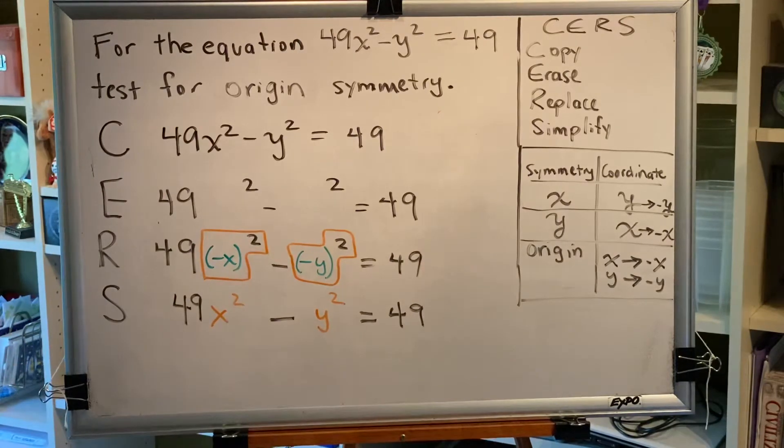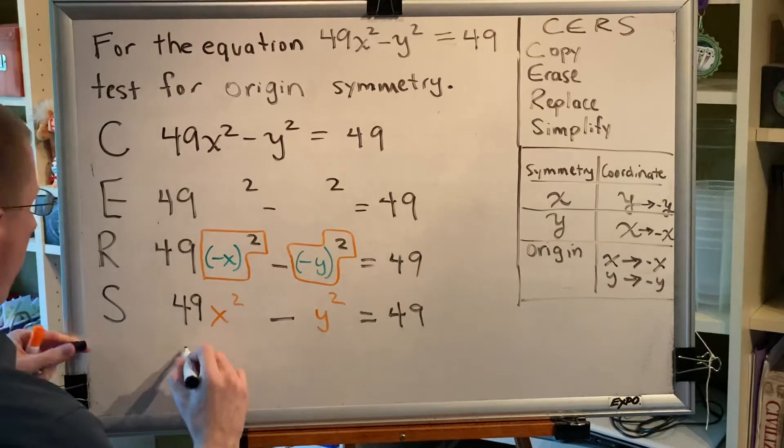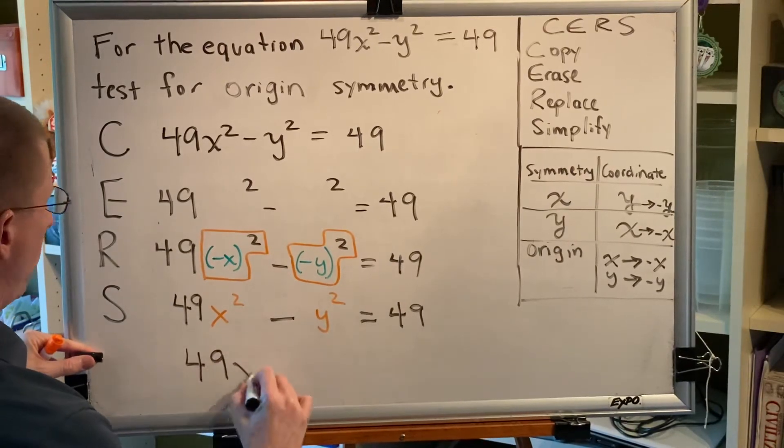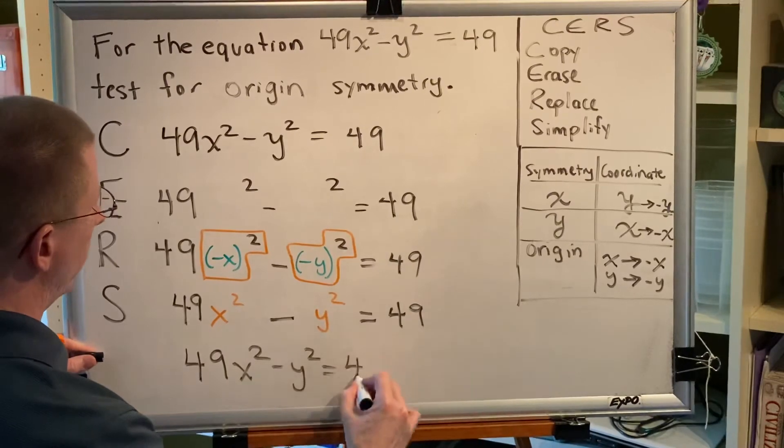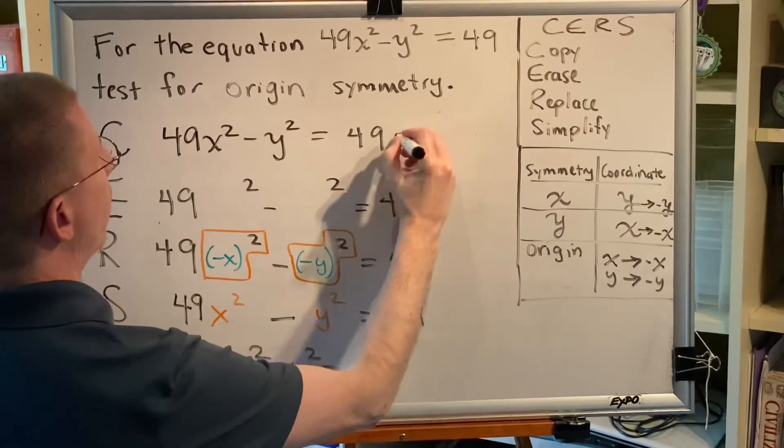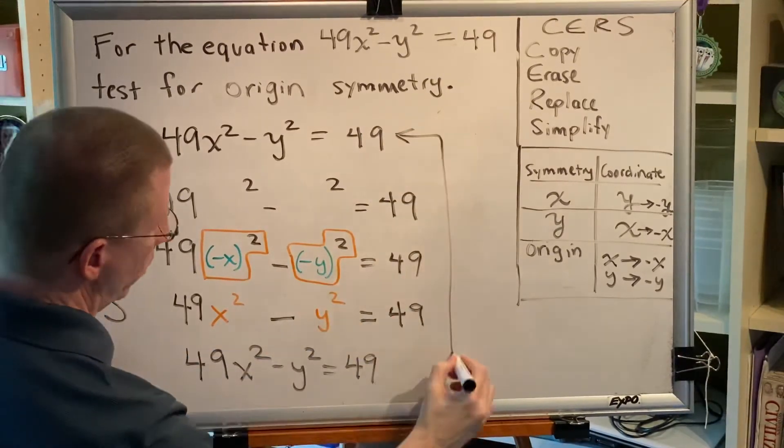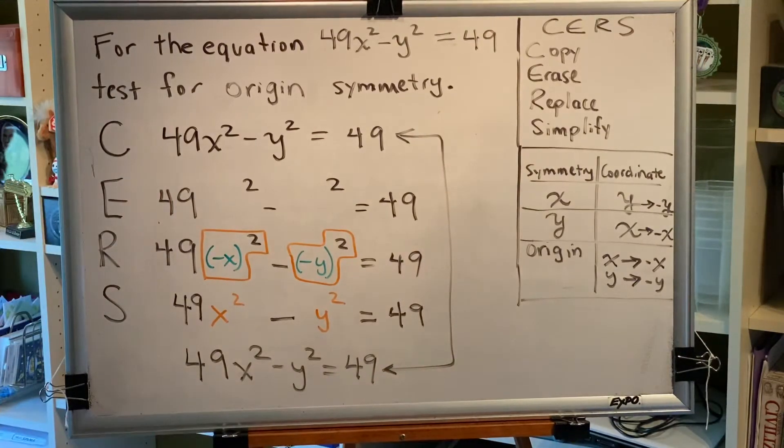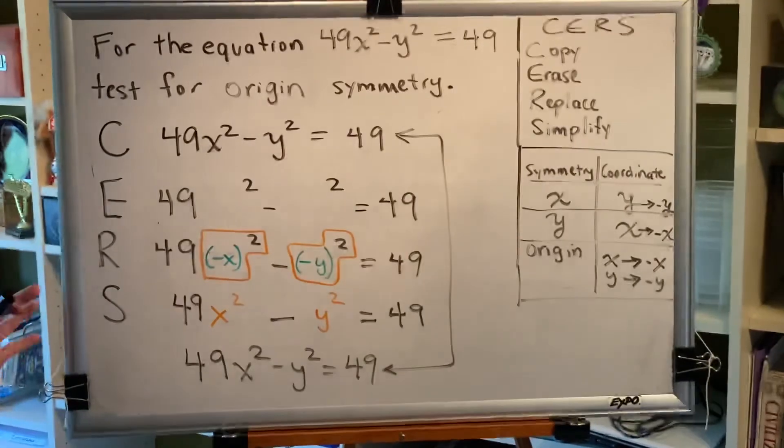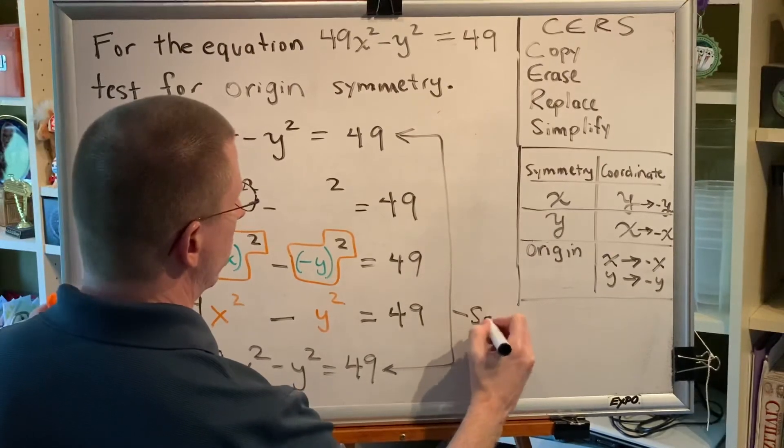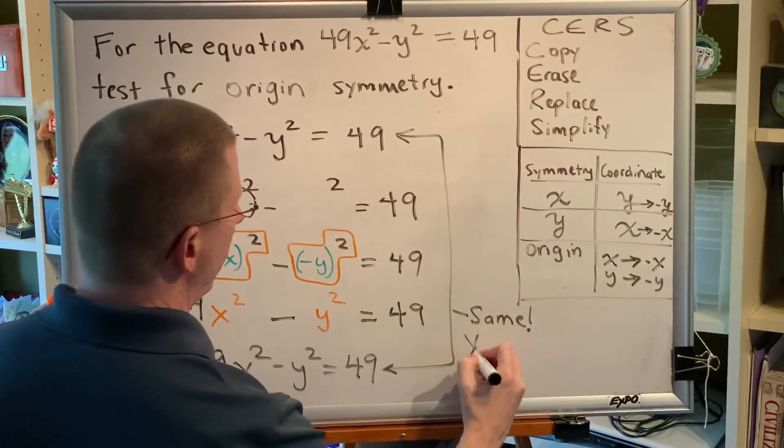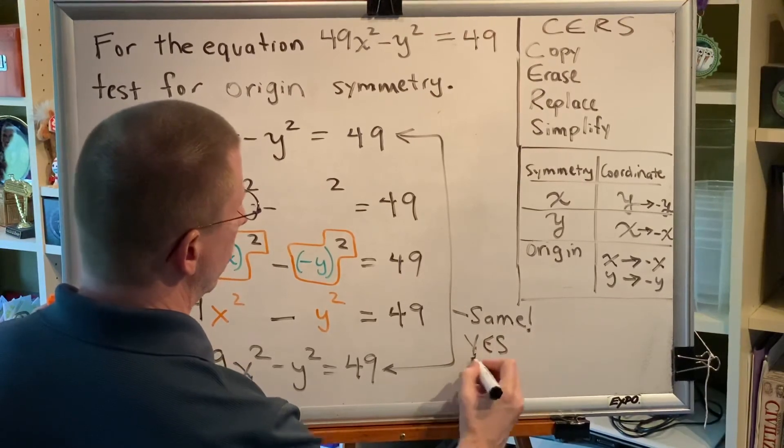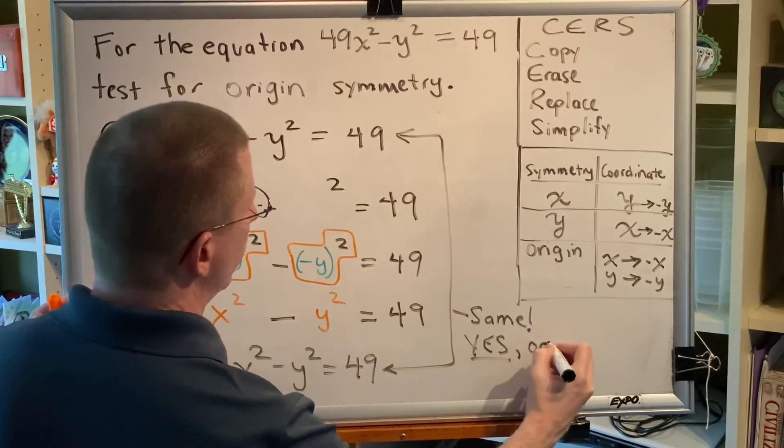Now, is there anything else we can simplify? No, we're done. So our final equation is 49x squared minus y squared equals 49. And when we compare the equation that we started with to the equation that we ended up with, we find that they are identical. They are the same. Therefore, yes, we have origin symmetry.